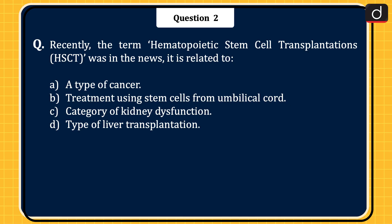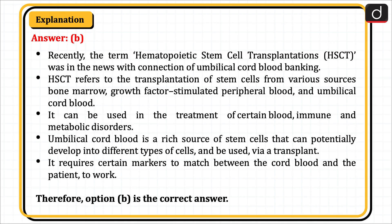Next question: Recently the term 'hematopoietic stem cell transplantation' was in the news. It is related to: a type of cancer; treatment using stem cells from umbilical cord; a category of kidney dysfunction; or type of liver transplantation. The correct answer is Option B, treatment using stem cells from umbilical cord. The term was in the news in connection with umbilical cord blood banking. HSCT refers to the transplantation of stem cells from various sources — bone marrow, growth factor-stimulated peripheral blood, and umbilical cord blood — and can be used in the treatment of certain blood, immune, and metabolic disorders. Umbilical cord blood is a rich source of stem cells, requiring certain markers to match between the cord blood and the patient.